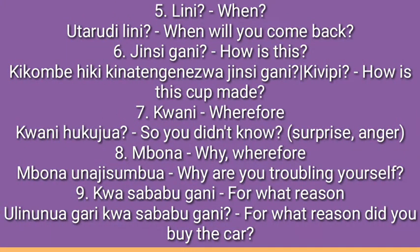Number five is 'lini,' meaning 'when.' Example: 'utarudi lini?' — when will you come back? Number six is 'jinsi gani,' meaning 'how.' Example: 'kikombe hiki kinatengenezwa jinsi gani?' or 'kinatengenezwa kivipi?' — how is this cup made? If you want to know how to form words like 'kivipi,' use the link above.